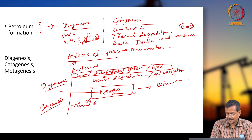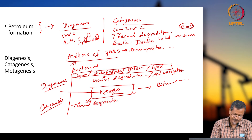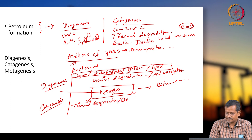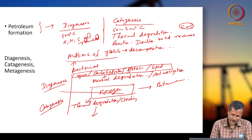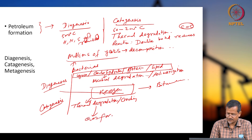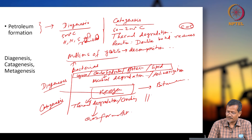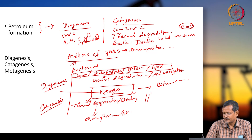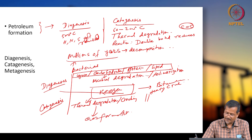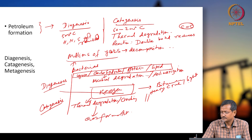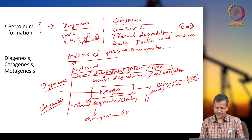Thermal degradation and cracking occur. If you go further, gas formation will take place. When thermal degradation happens, you are getting heavy crude oil, then light oil. Different crude oils are obtained after the kerogen stage.